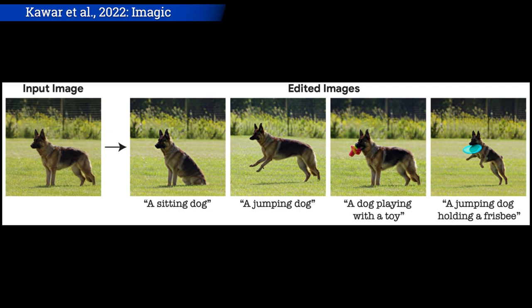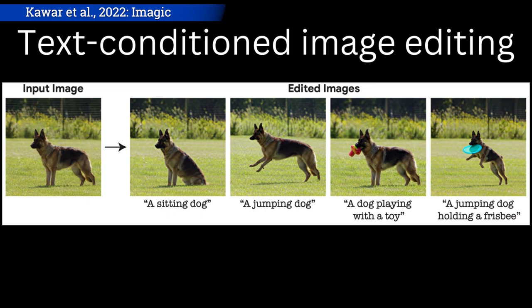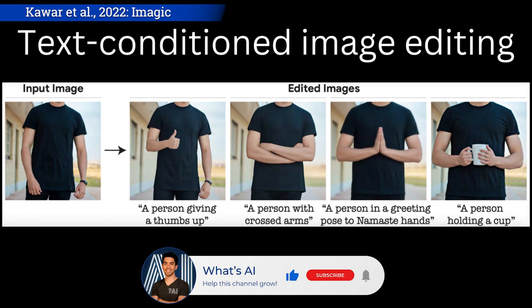This task is called text-conditioned image editing. This means editing images by only using text and an initial image, which was pretty much impossible not even a year ago. Now look at what it can do — this is all done from a single input image and a short sentence where you say what you'd like to have. How amazing is that?